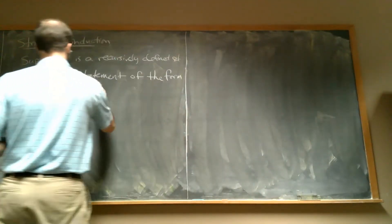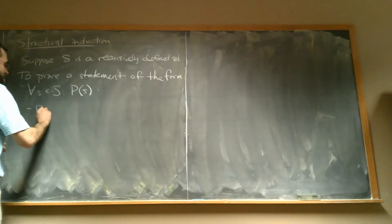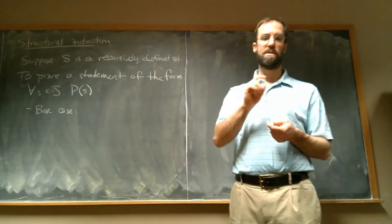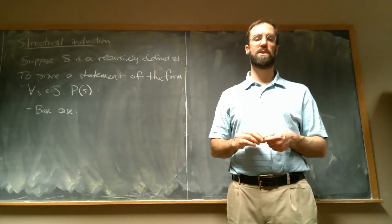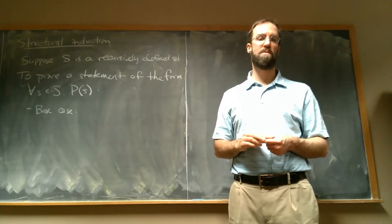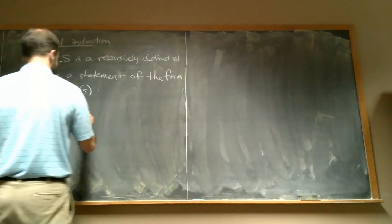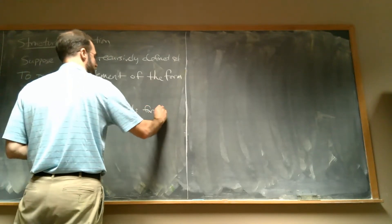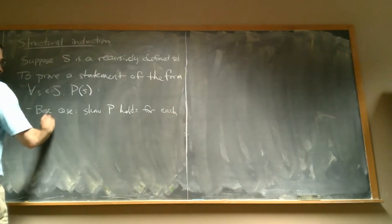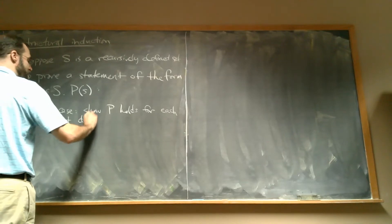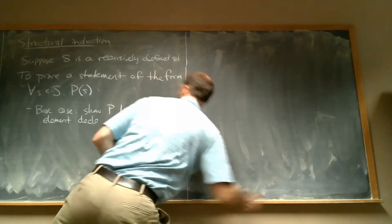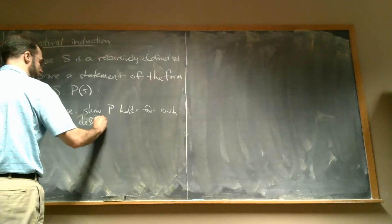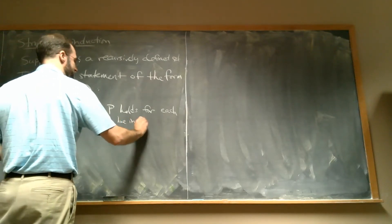For the base case — remember, a recursively defined set has a base case where you declare one or more elements to be in the set — we have to show that the property holds for those elements. So: show P holds for each element defined to be in S as a base case.